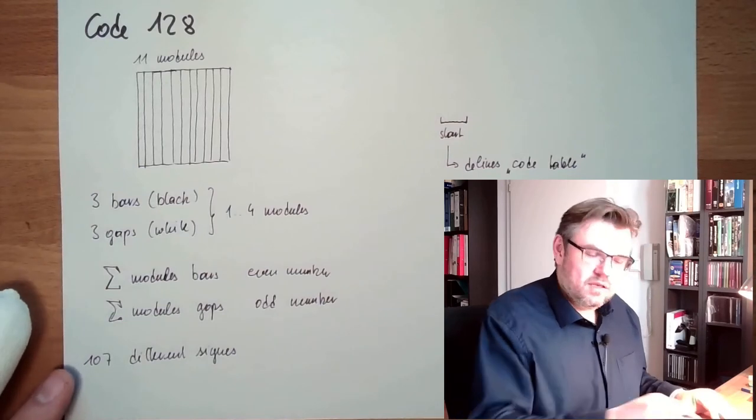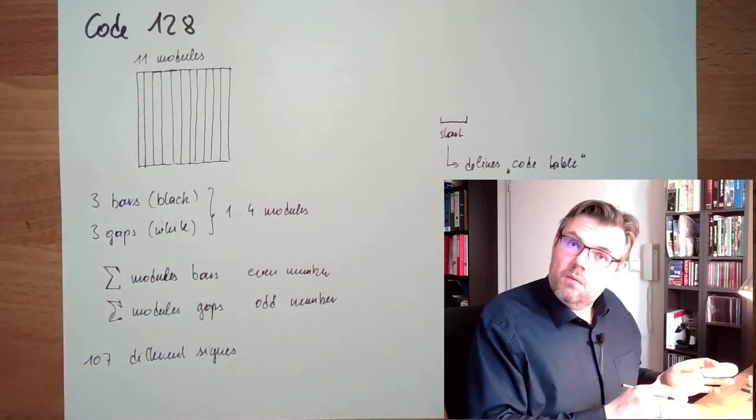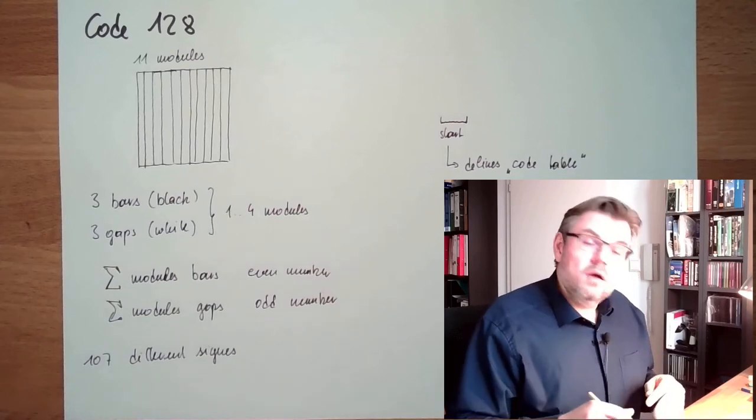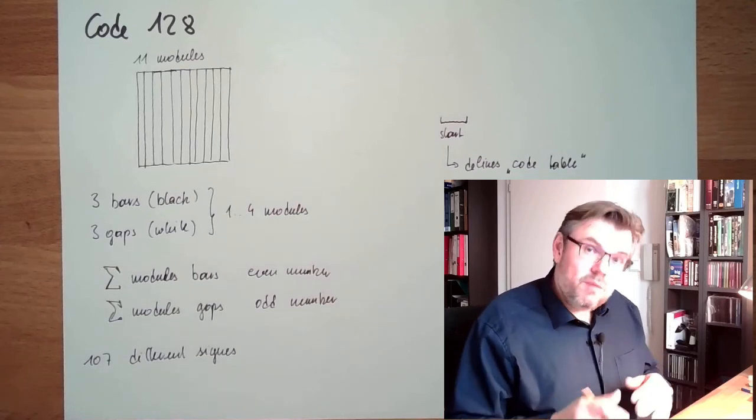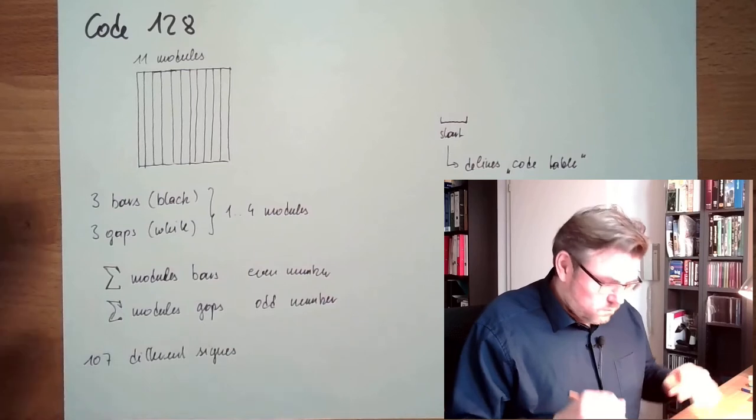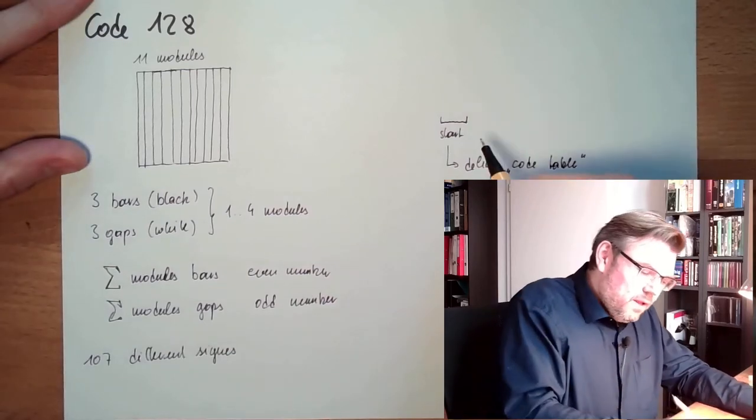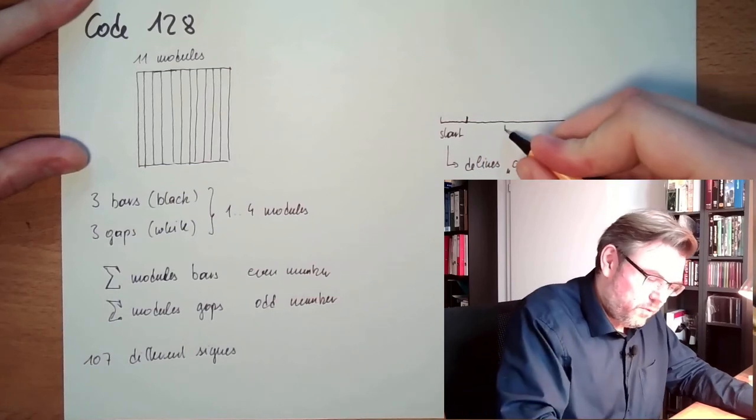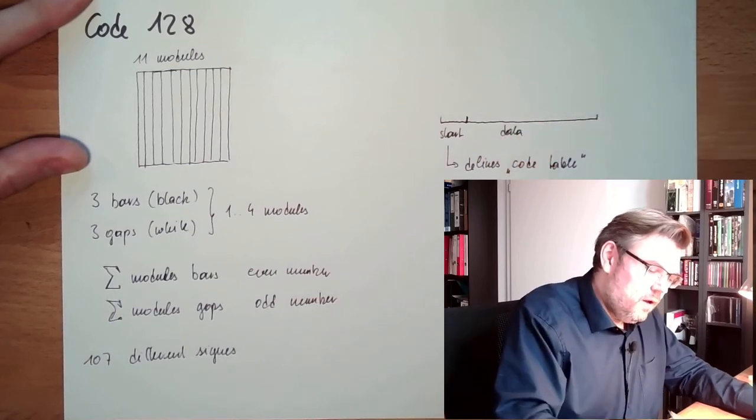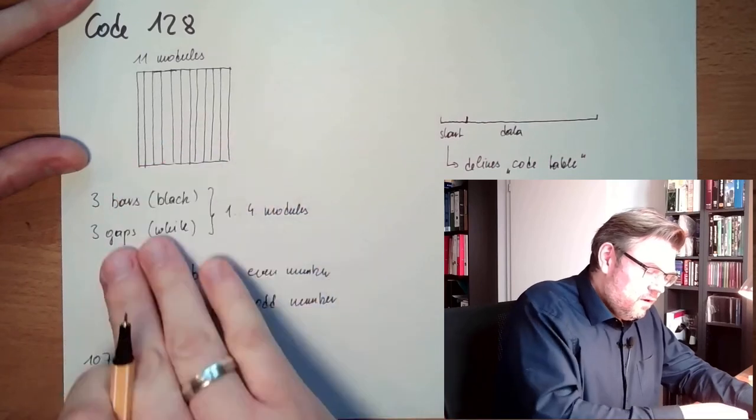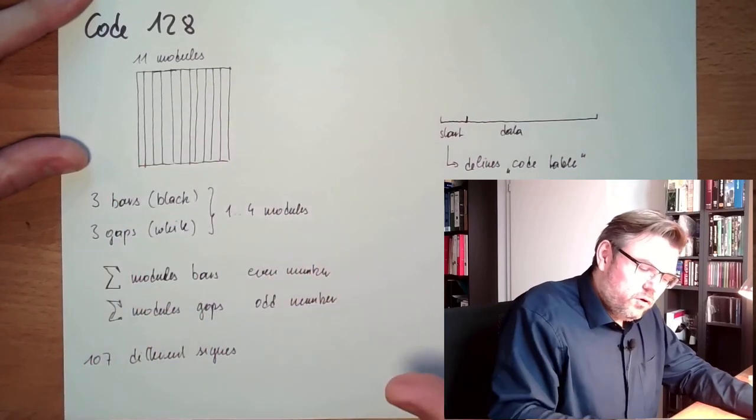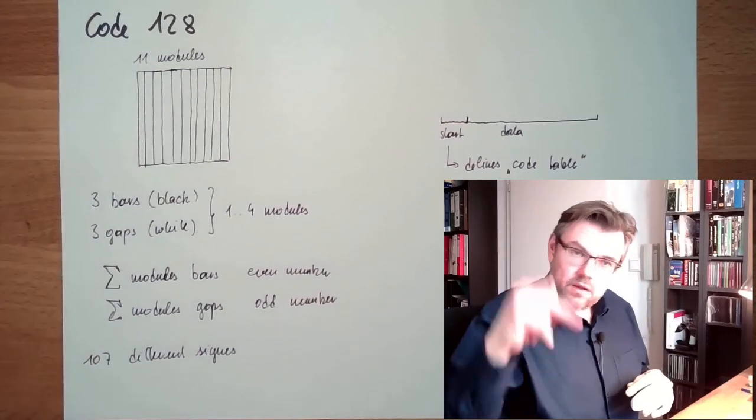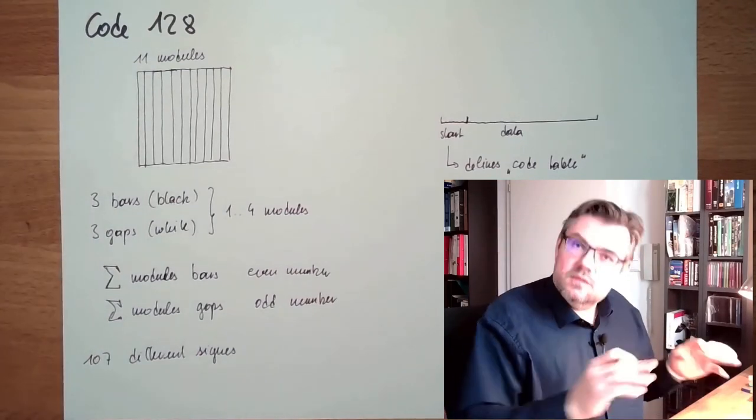If I'm using start sign number one, I'm using code table number one. If I'm using start sign number two, I'm using code table number two. And if I'm using start sign number three, I'm using code table number three. Depending on the code table, I can then interpret the data which is following. So then we have the data, one sign after the other, following these rules. I know the code table, I know the pattern. I have to look up in the code table the pattern, and that gives me the sign.